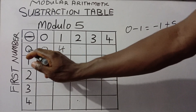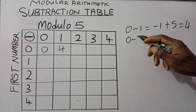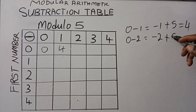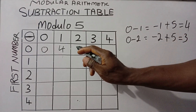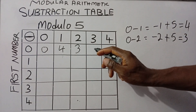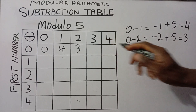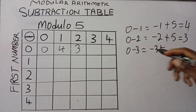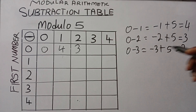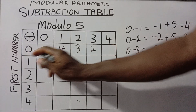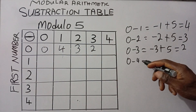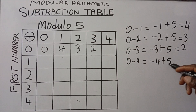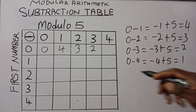For this part, it has to be 0 minus 2, which gives us minus 2. You add the modulus to it — plus 5 — and that gives us positive 3, so we have 3 here. Then 0 minus 3 gives us minus 3; add the modulus of 5, and that gives us 2. Then 0 minus 4 gives us minus 4; add plus 5, and what we're going to have is 1. So we have 1 here.